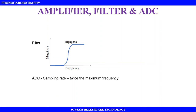The sampling rate should be twice the maximum frequency, following the Nyquist criterion. Phonocardiography is the recording of heart sound, and detecting heart murmurs is the most important application. Thank you.